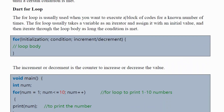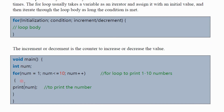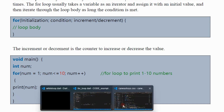In this example, we have a variable 'num' which is an integer. We initialize it: num equals 1. The condition is num less than or equal to 10, then num++ to increment it. The function of num++ is to increment the value of num. Every time the loop runs it increments until it meets the condition of num less than or equal to 10. Let's jump into Visual Studio Code and look at an example.